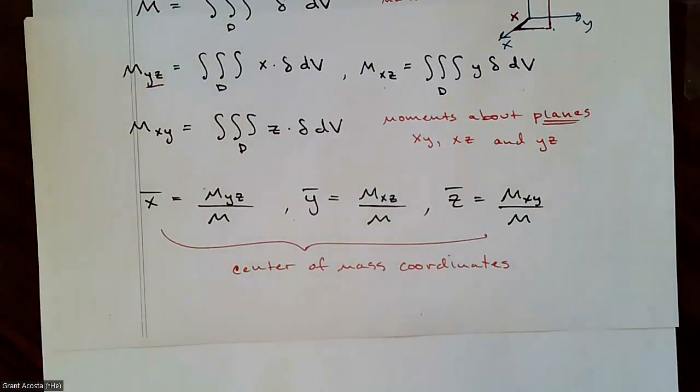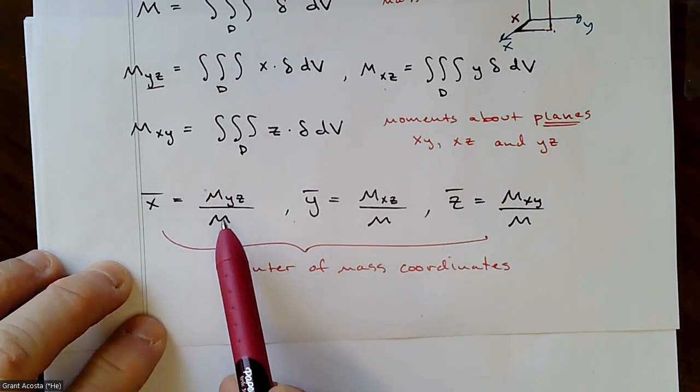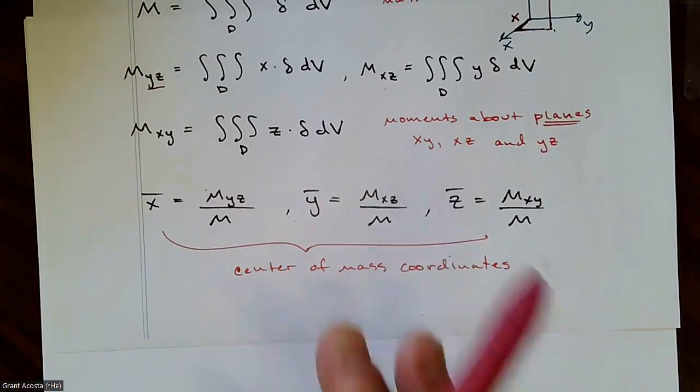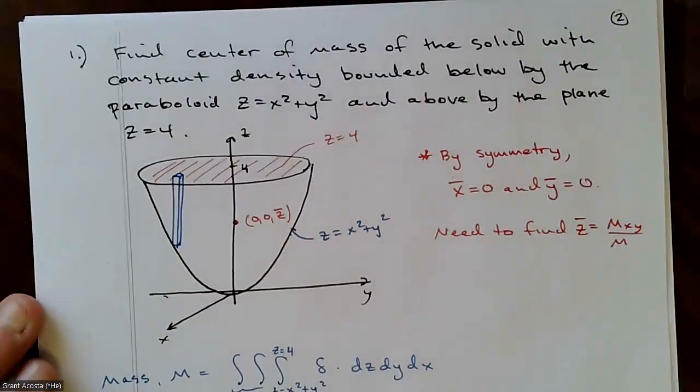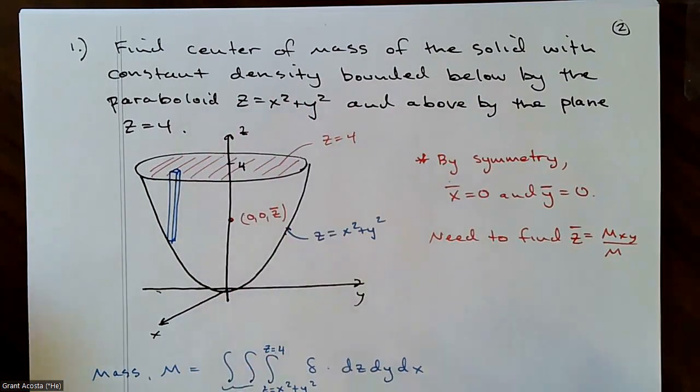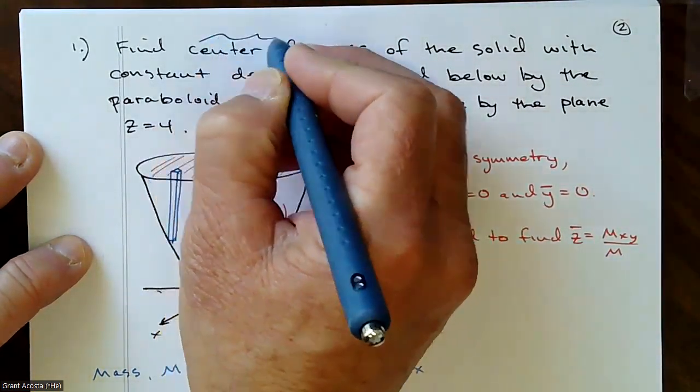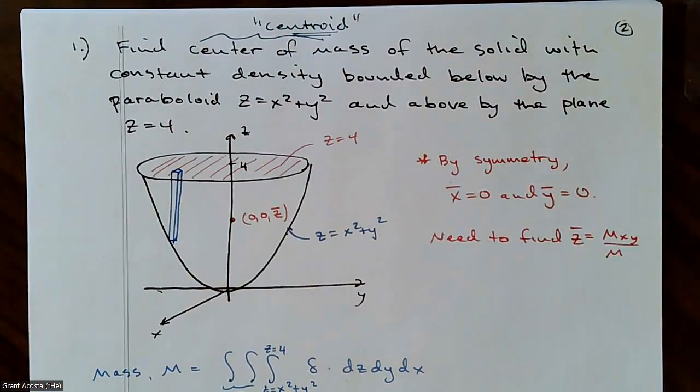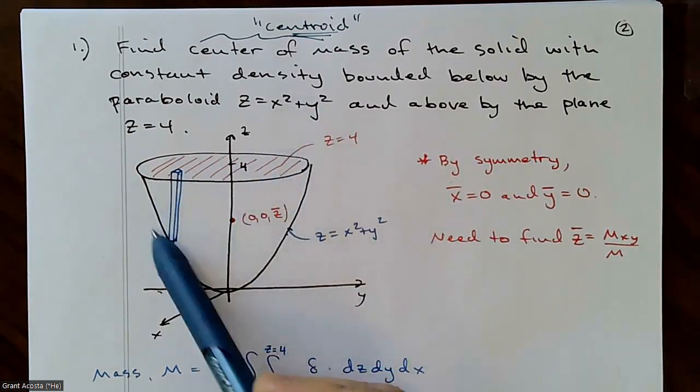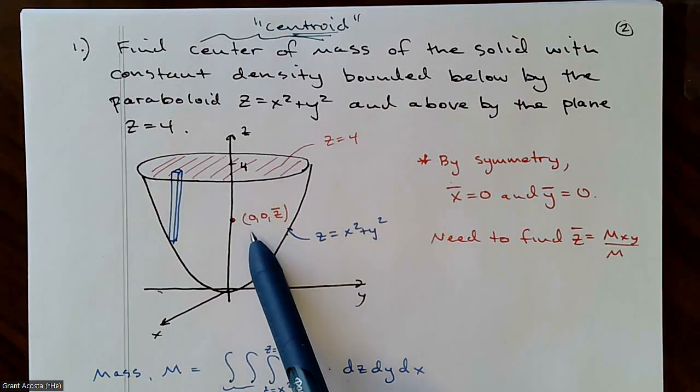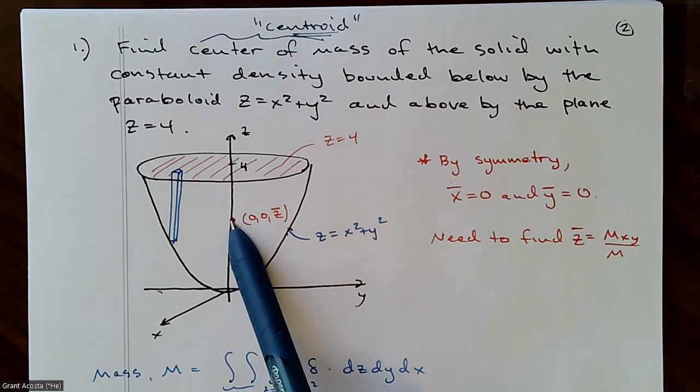So let's look at an example. You can imagine this becomes very, very tedious. You could potentially have to do four integrals, one for each of the three moments, and one for the mass, four integrals to get an answer. But a lot of the more reasonable problems, which is what I'm going to start with here, I'm going to find the center of mass of the solid with constant density. Recall, if your solid has constant density, we can also call the center of mass the centroid.